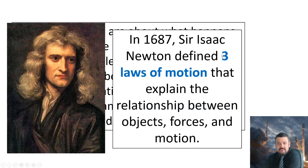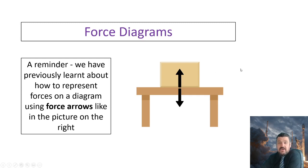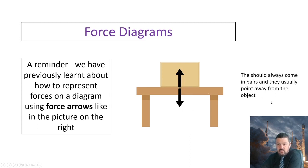Isaac Newton in 1687 identified and defined the three laws of motion that explain the relationship between objects, forces and motion. So we're going to have a quick reminder of stuff we've covered previously — force diagrams. We've previously learned how to represent forces on a diagram using force arrows. The picture on the right shows a box on a table with a force representing gravity and a counter force in the opposite direction. Remember they should always come in pairs and they usually point away from the object. That is the golden rule of forces — they always come in pairs.